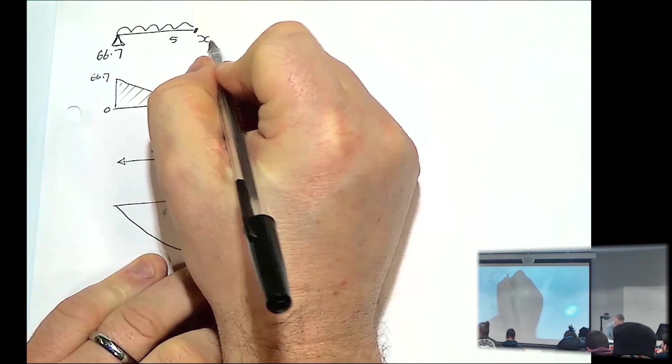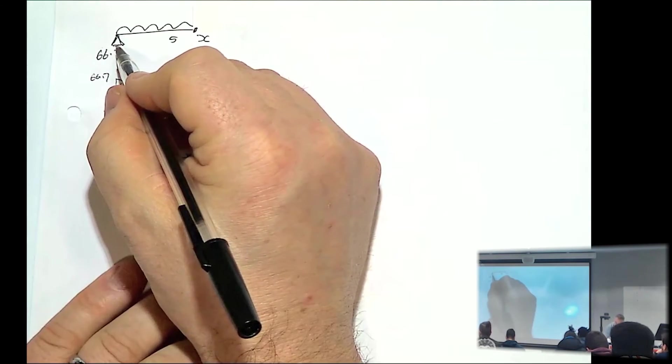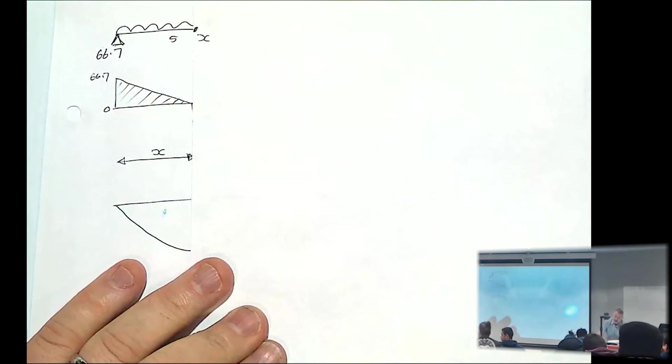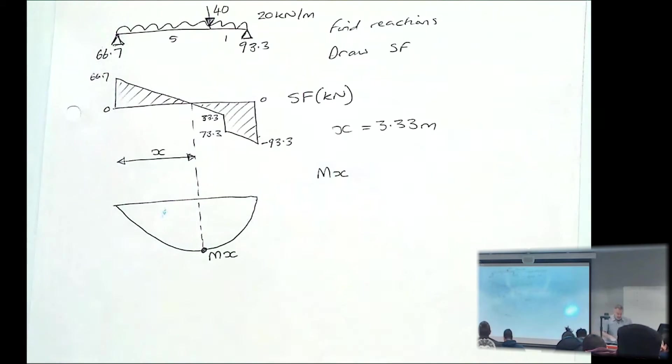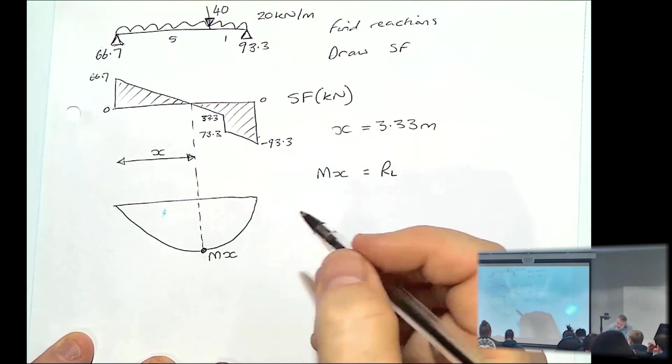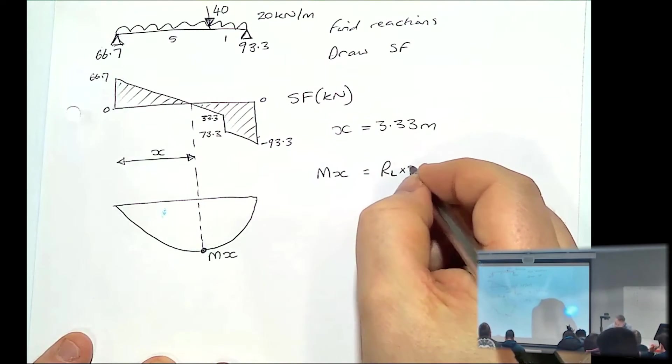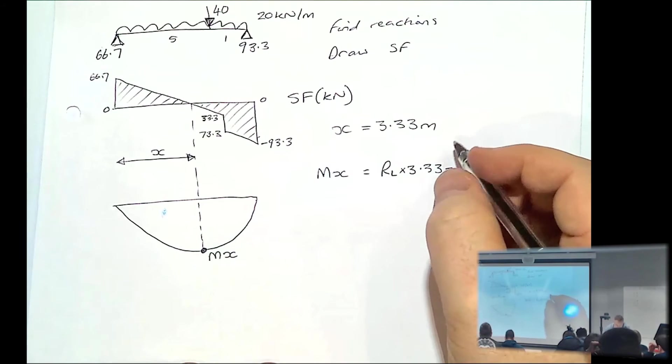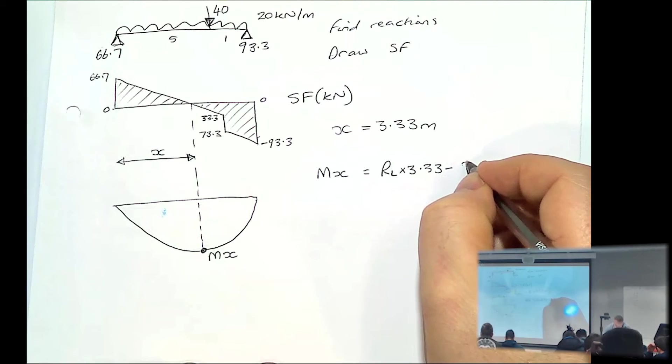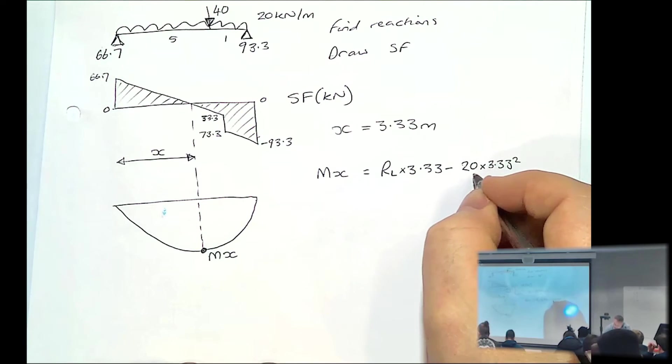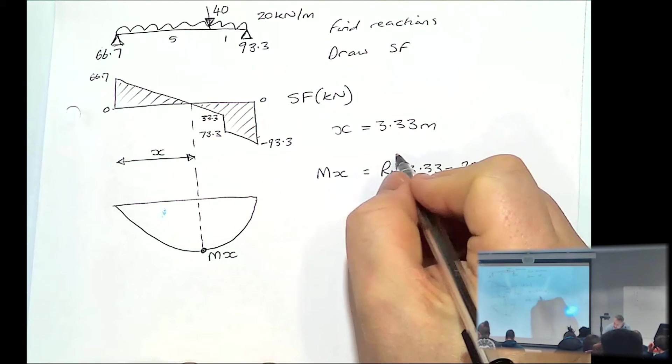So at x, it would be 3.33 times by the reaction, and then you've got minus 3.33 times by the UDL. So if I write out that formula, the reaction at the left hand side, that's 66.7, times by 3.33. So that's the point load.